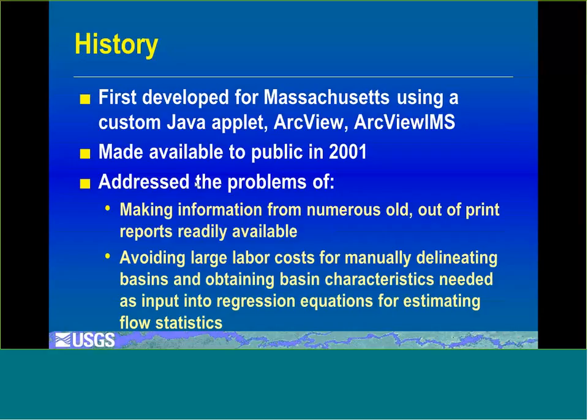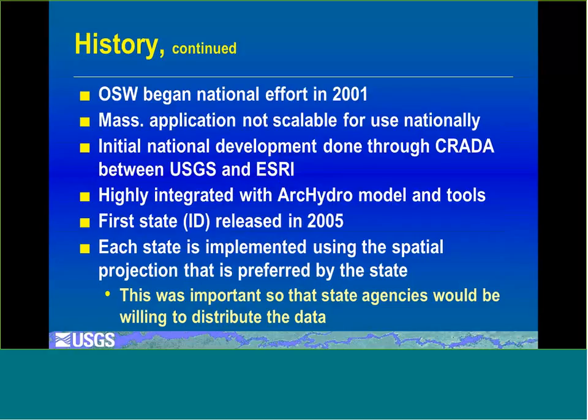There was an initial version of StreamStats developed for Massachusetts back in the 1990s using a custom Java applet connection between ArcView and ArcView IMS. It was made available to the public in 2001. It addressed the problems of making information from a lot of old reports that were out of print or not readily available, and also avoiding the large labor costs for manually delineating drainage basin boundaries and obtaining basin characteristics needed as input into regression equations for estimating flow statistics.